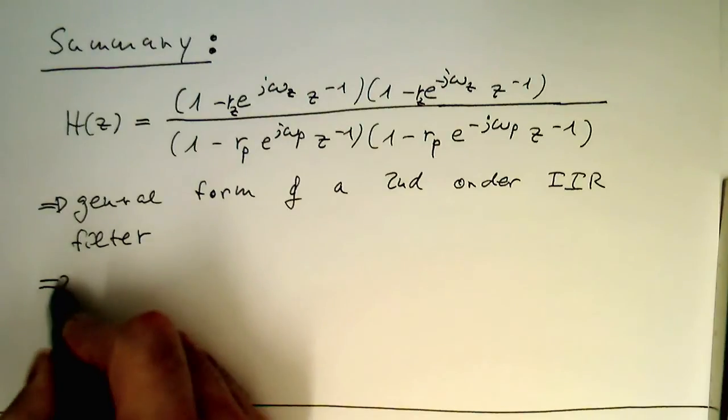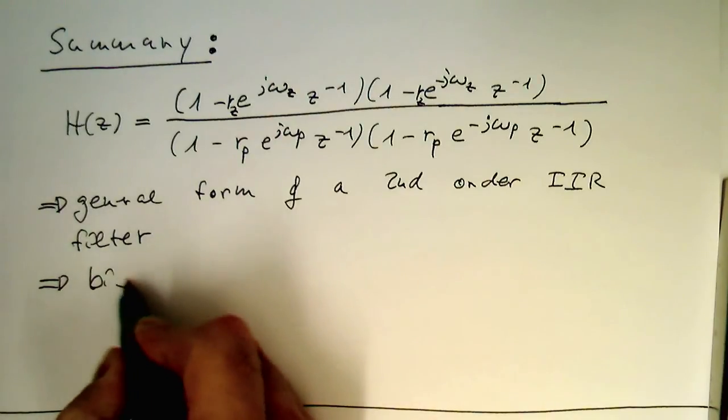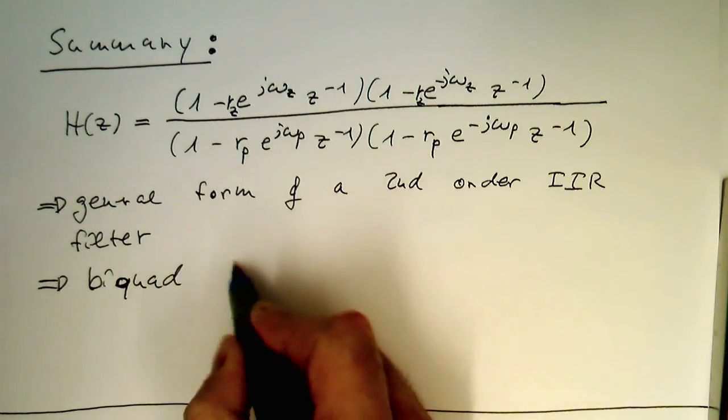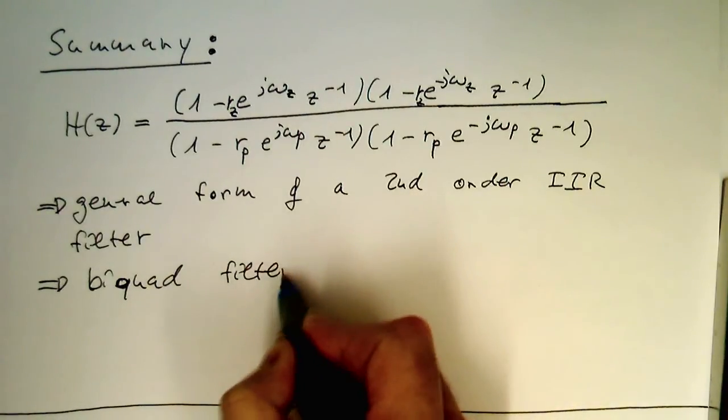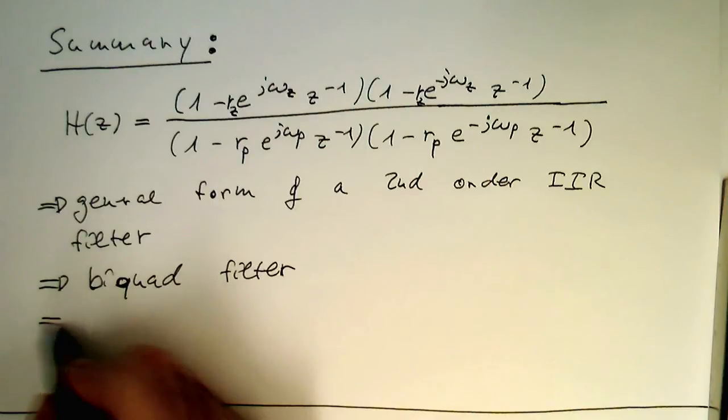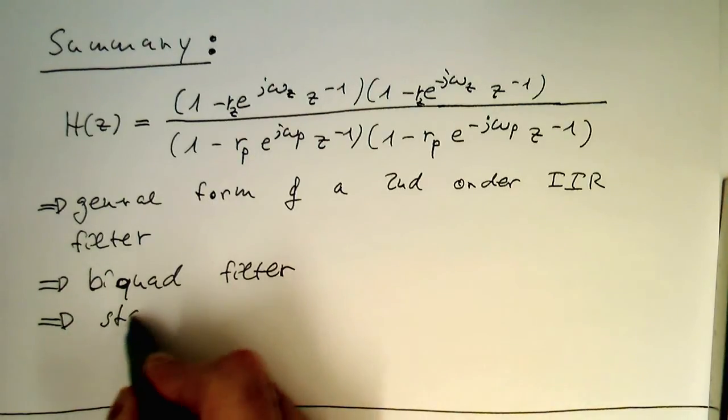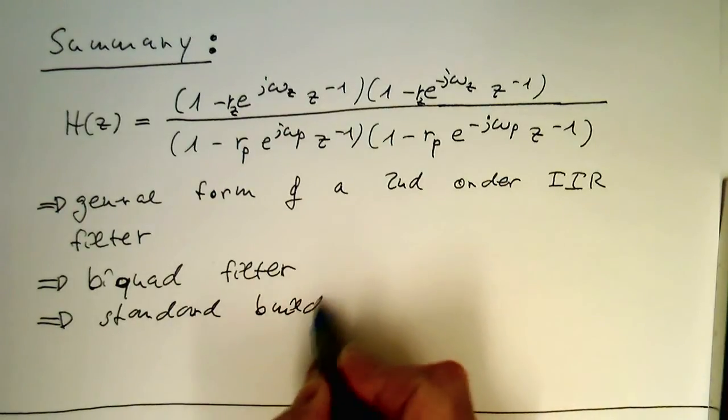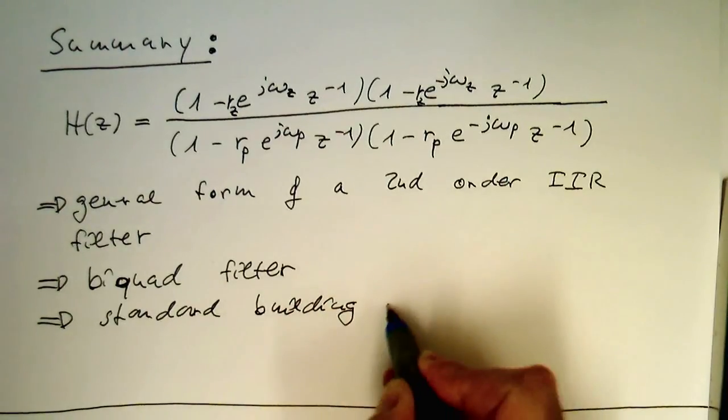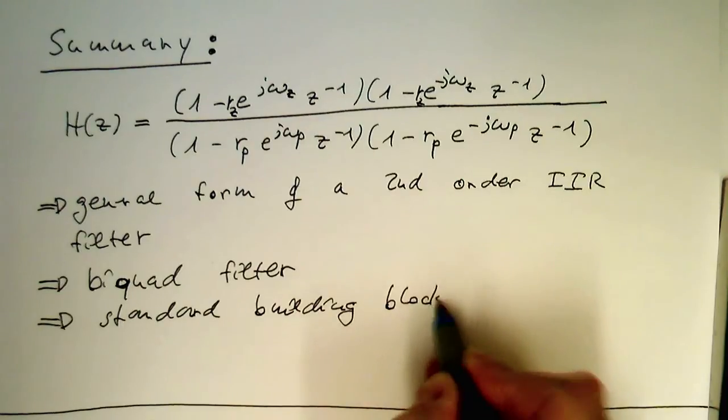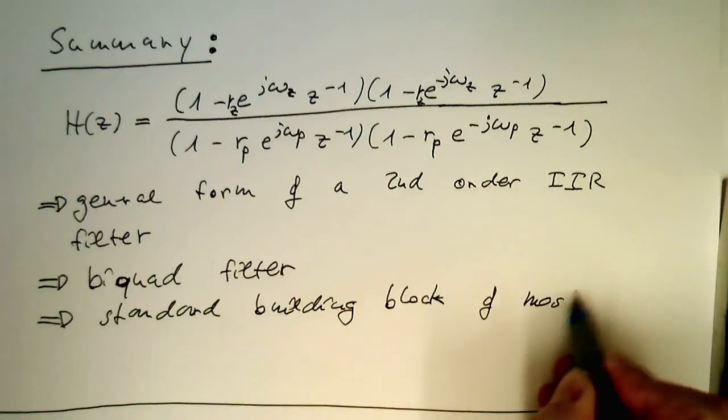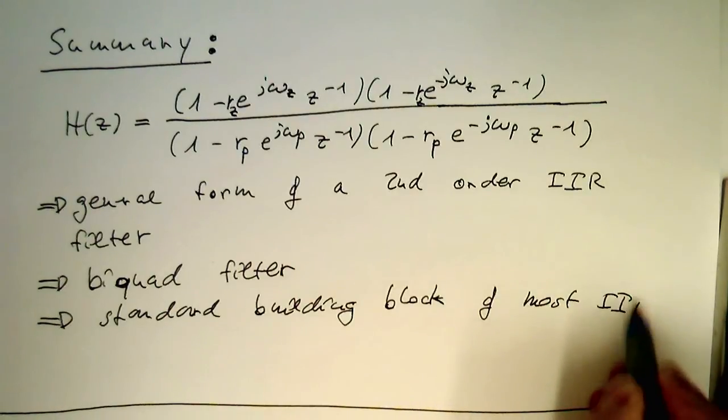This is very often called a biquad filter. This is the standard building block of most IIR filters.